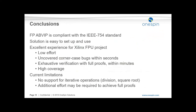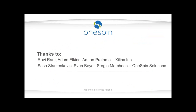In conclusion, the floating point verification IP from OneSpin is compliant with the standard and easy to set up and use. The Xilinx project was an excellent experience — low effort, uncovering corner case bugs within seconds, and exhaustive verification with full proofs within minutes, with high code coverage. Current limitations: there is no support for division and square root yet, and additional effort may be required to achieve full proofs in some cases. Thanks to the Xilinx folks and my colleagues at OneSpin.